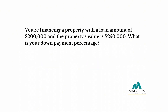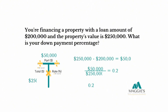Using the same scenario — a loan amount of $200,000 and a property value of $250,000 — subtract the loan amount from the property value to find the down payment: $250,000 minus $200,000 equals $50,000. In the t-chart, the $50,000 goes in the part section and $250,000 goes in the total column. Divide then multiply by 100 and you have a down payment percentage of 20%.